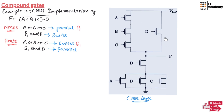This is the CMOS logic implementation of the given function. The NMOS implementation connects A, B, and C in parallel for the OR operation, then D is connected in series for the AND operation. For the PMOS implementation, A, B, and C are connected in series, and D is connected in parallel. The PMOS circuit is connected to VDD and the NMOS circuit is connected to ground, and these two are connected together at the output. This completes the implementation of CMOS logic for the given function — this is about compound gates. I hope you have understood the topic. Thank you.